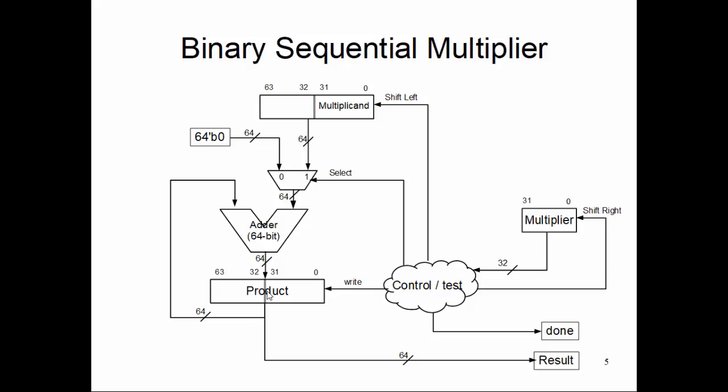We have the product register, which is initialized at 0 at the start of this whole algorithm. This product itself is connected as one input of the adder, and the output of the adder is connected back into the product register so that it can conveniently do product plus multiplicand if needed and store that partial summation into the product register.